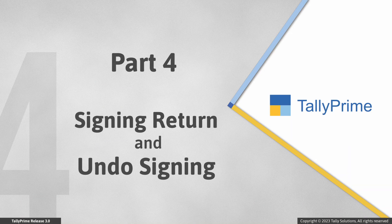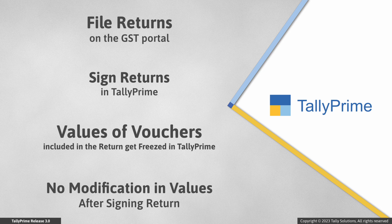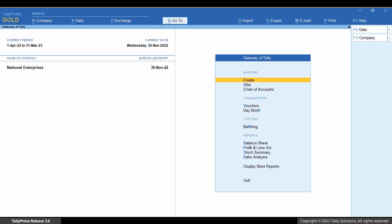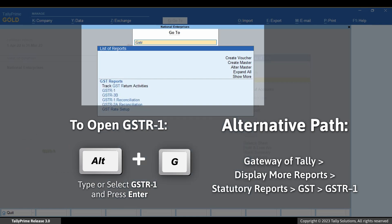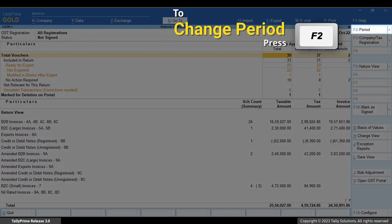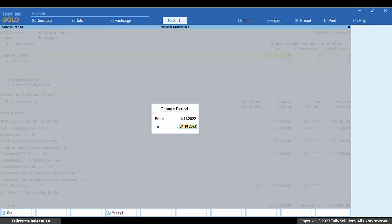Now let us see how to sign a return using GSTR1 and undo signing whenever needed. As a supplier of goods or services, you must be filing returns on the GST portal for a specific period as followed in your business practices. Once you file returns on the GST portal, you can sign the return in Tally Prime. Signing a return in Tally Prime freezes values of all the transactions included in the return. As a result, you will not be able to modify transactions that are included in the filed return.